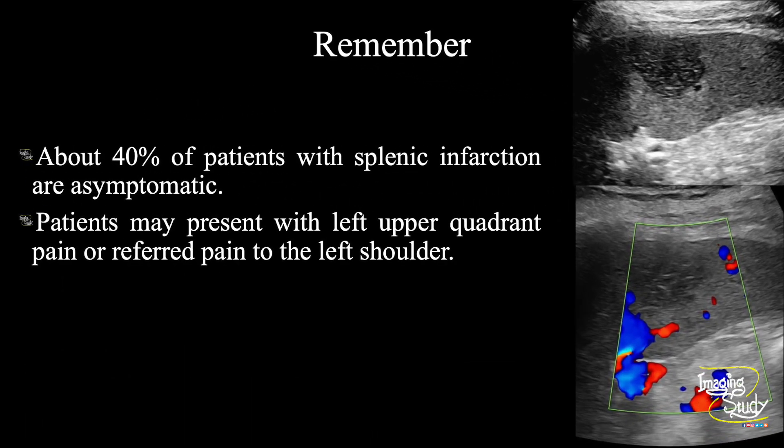The take-home message: about 40% of patients with splenic infarction are asymptomatic, like this patient. A patient may present with left upper quadrant pain, or there may be referred pain to the left shoulder, as the spleen is located just under the left hemidiaphragm.